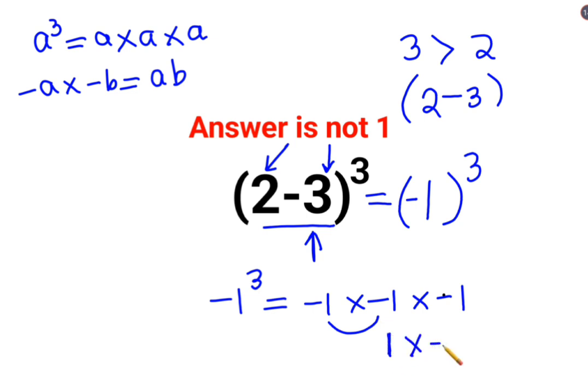But still there is another minus 1 happening over here. So here also if you have a positive value multiplied by a negative value, the answer comes out to be negative. So the answer for this question comes out to be negative 1.